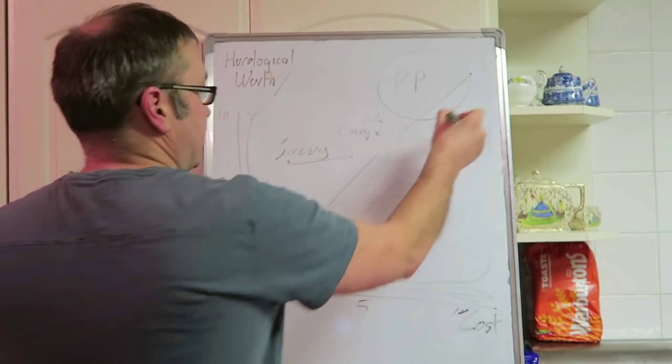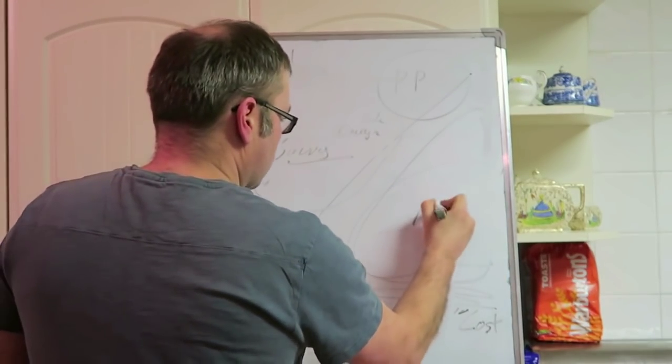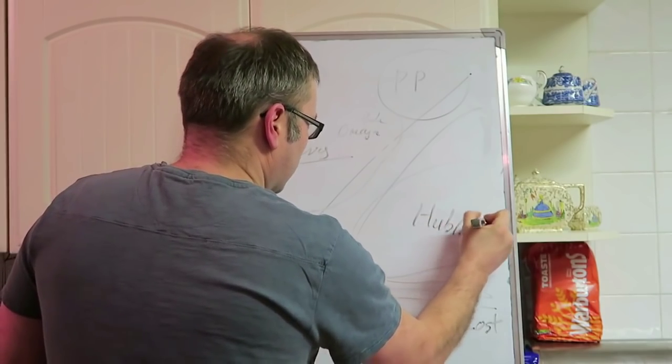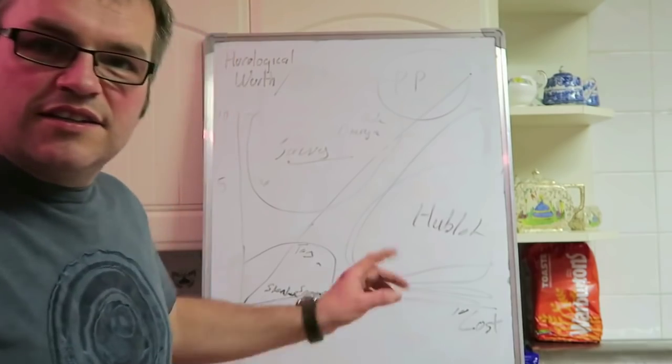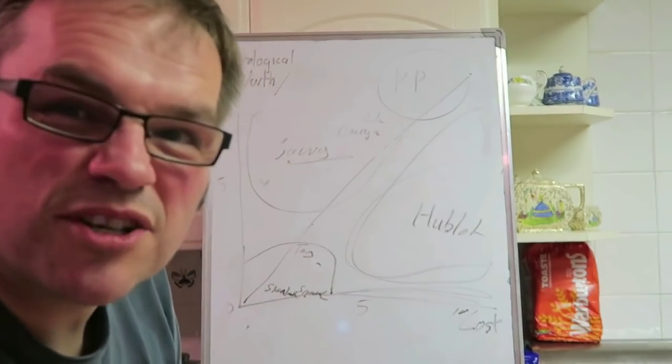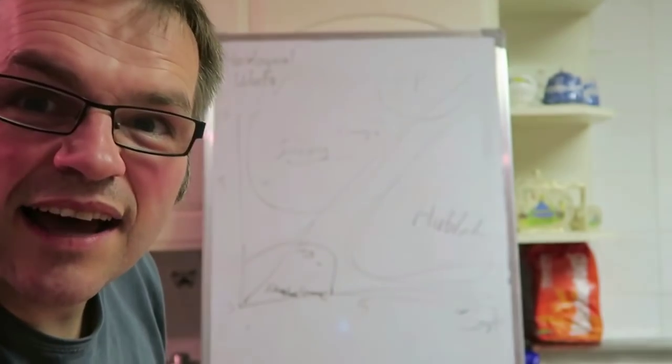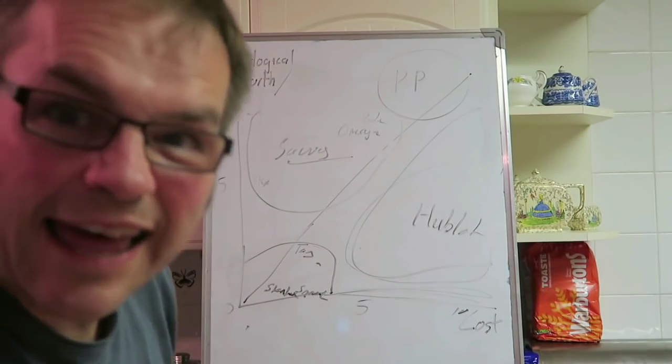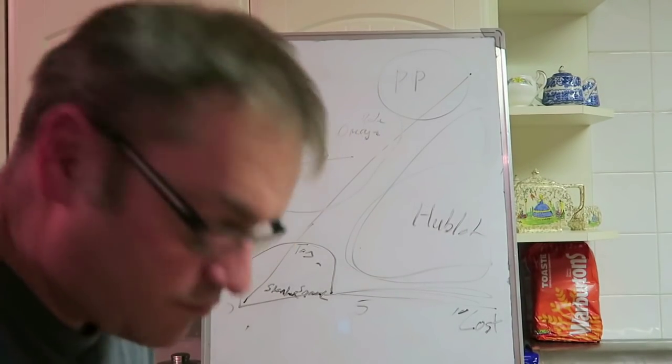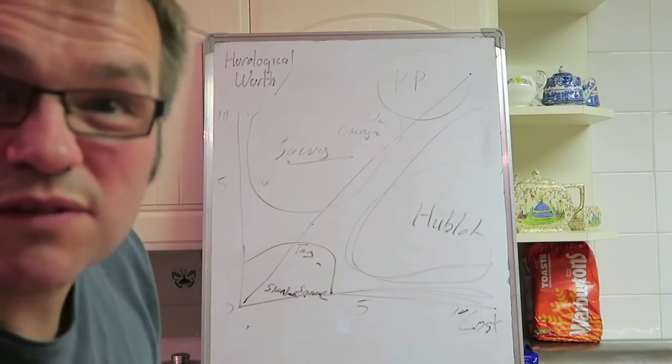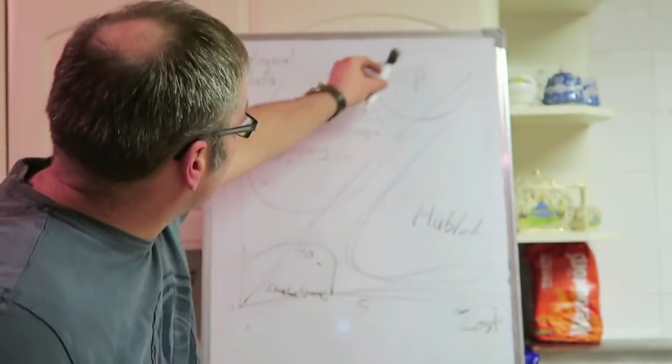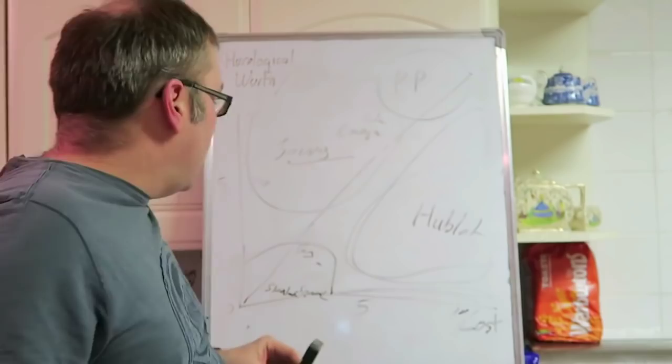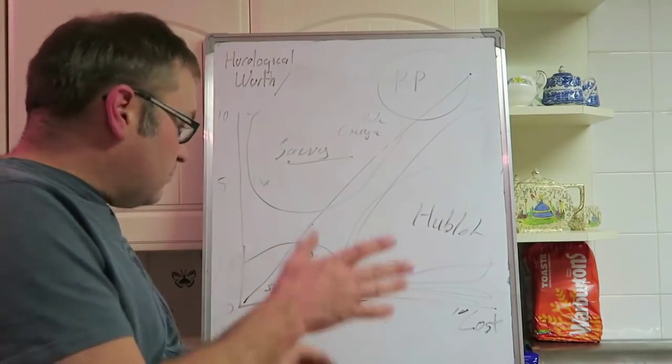That leaves a big space here, and this space is Hublot and such like. This is the footballer section - the expensive watch with pretty much little horological worth that costs an absolute arm and a leg. This will be avoided by pretty much most of us. If we did have that sort of money and we're switched on, we'd be buying the stuff up here.